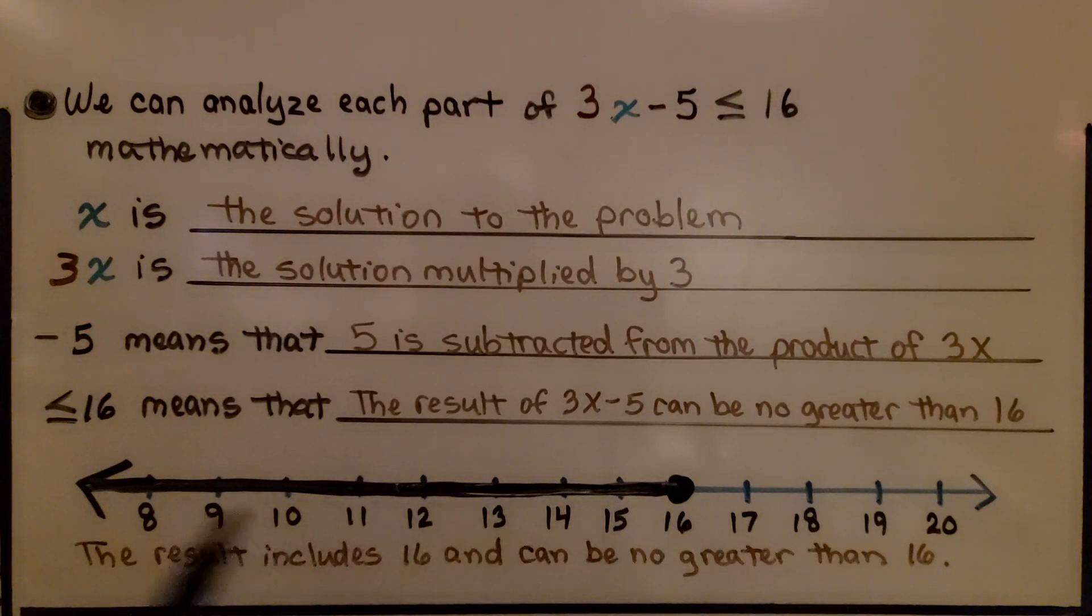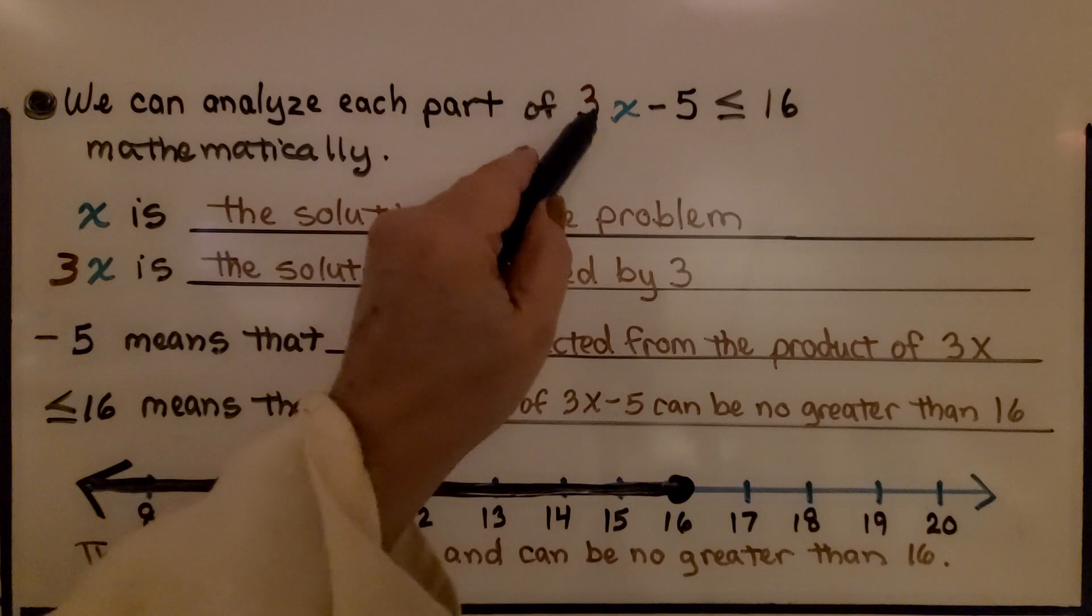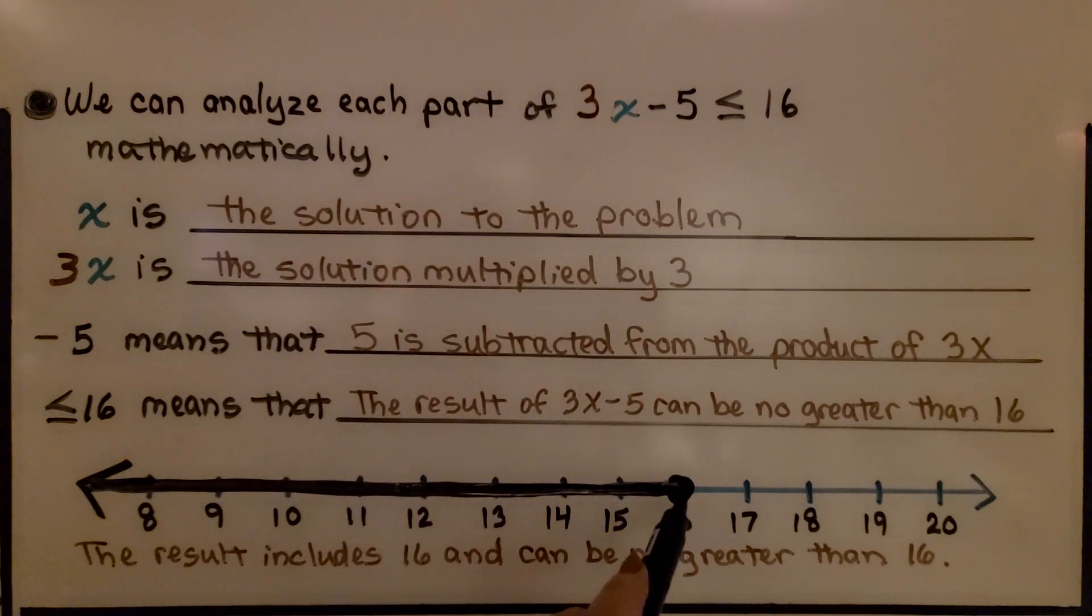Here we have a horizontal number line. We have 16 here. It's telling us that the result of this 3x minus 5 can be no greater than 16. It can't go past this point. So, it could be any of these values to the left. The result includes 16, that's why it's a filled in dot, and can be no greater than 16.